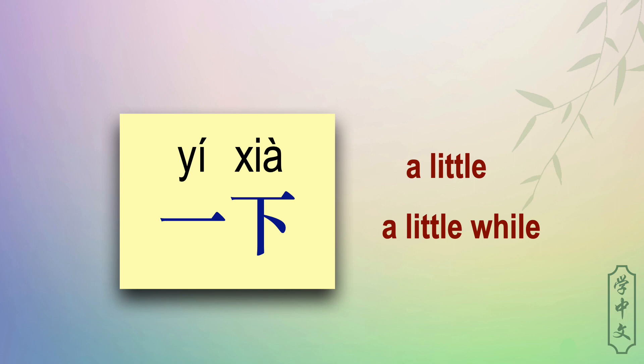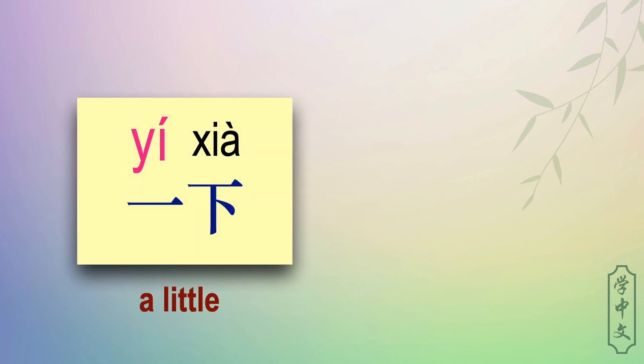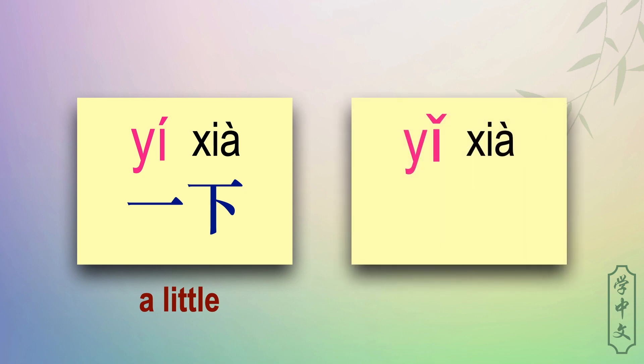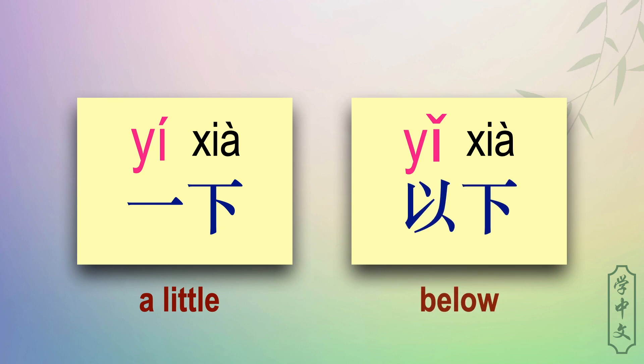We can kind of translate 一下 as 'a little', but please note the pronunciation: 一 is a rising tone. If you mistake the tone, you might confuse people. For example, if you say 以下, that is a falling-rising tone — 以下 is a different word. It means 'below'.